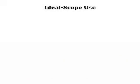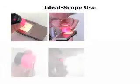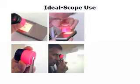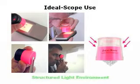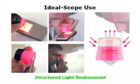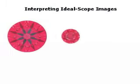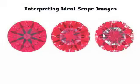The Ideal Scope can be used with a light tray or natural backlight. Light entering the diamond from above is red. Light from beneath is white. This structured light environment reveals how much light from above is properly returned to the viewer's eye. Interpretation is simple. Here are sample photos of well-cut, average, and poorly cut diamonds.